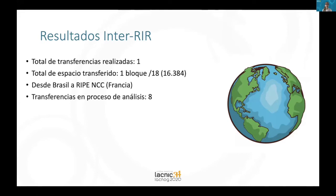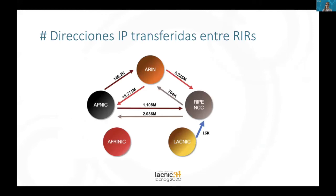Some results so far about the implementation of transfers outside the region: to date, one transfer has been done — a slash 18 block from Brazil to RIPE, specifically to France — but we have eight transfers that are being analyzed. Another interesting thing to observe is the IP movement between the different RIRs. We can see that the greatest bulk is from ARIN to other regions, especially ARIN to APNIC. LACNIC appears here with this first transfer.